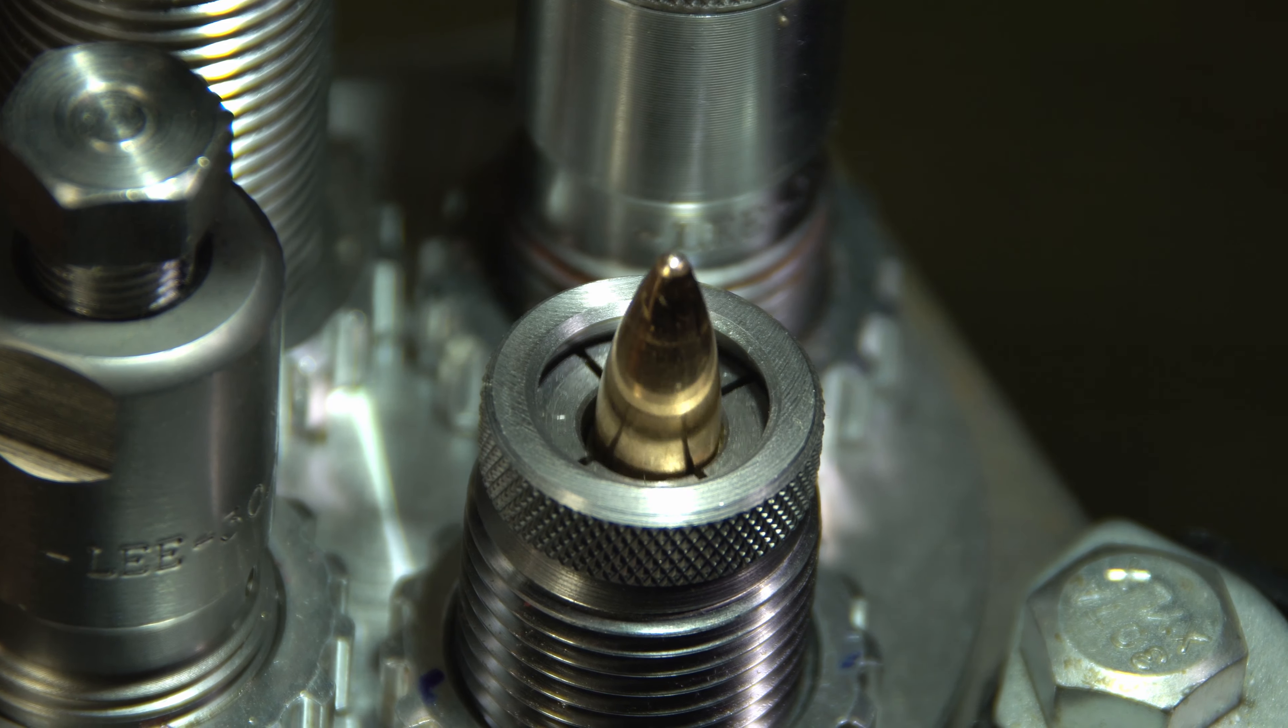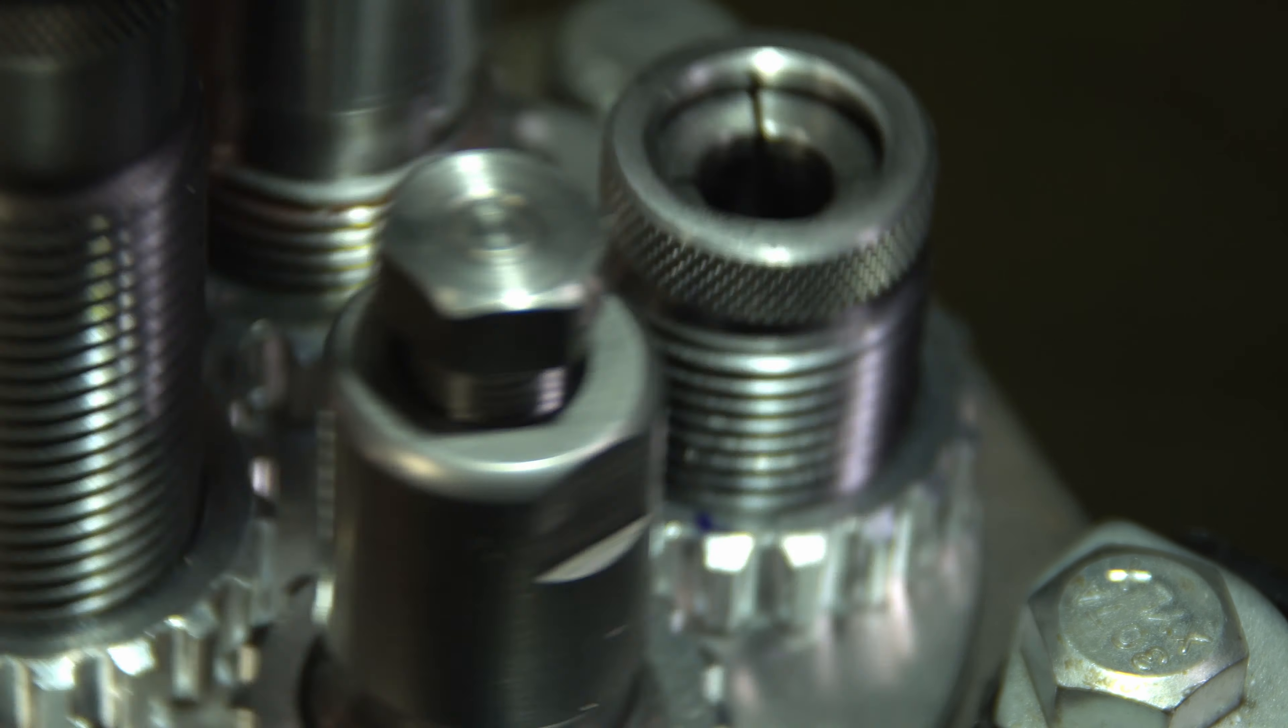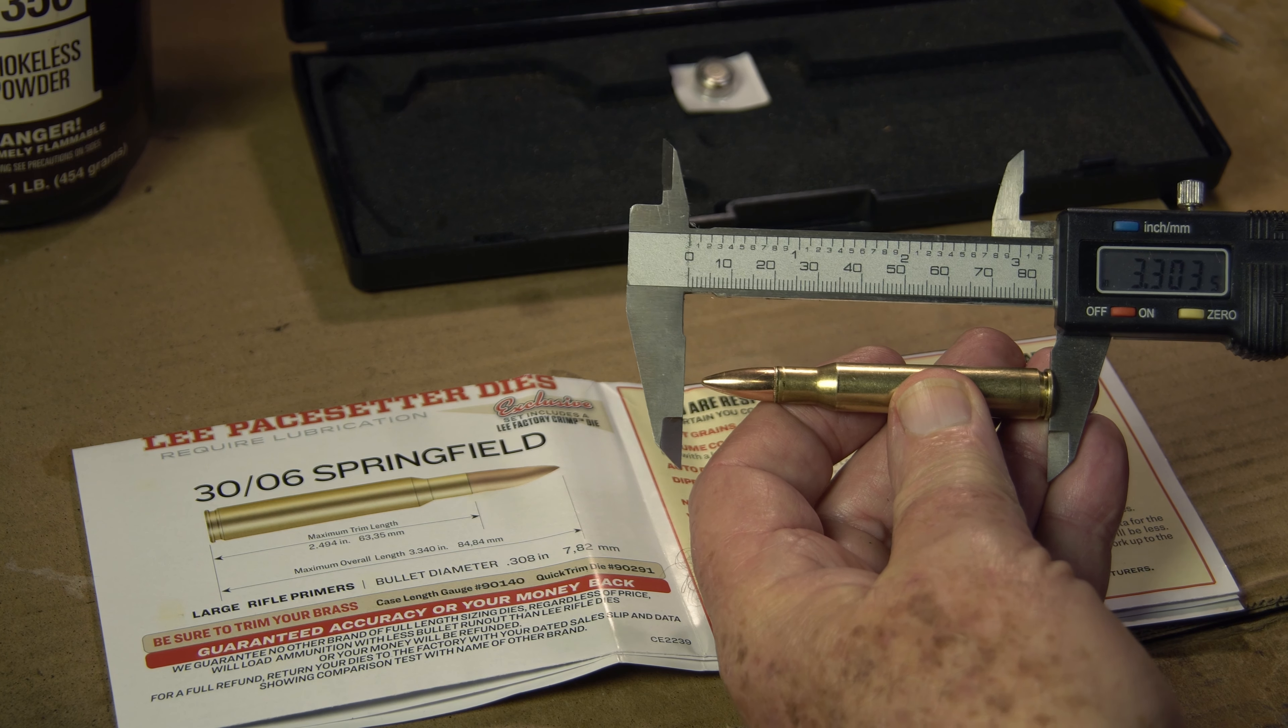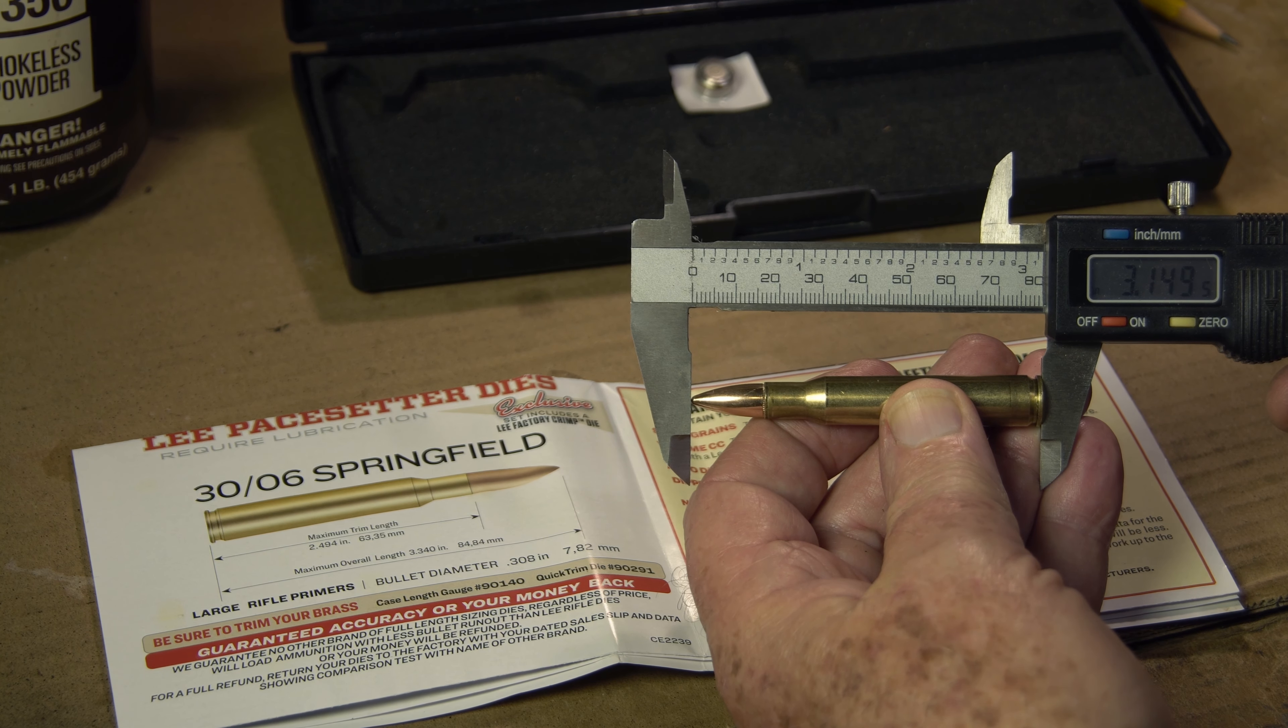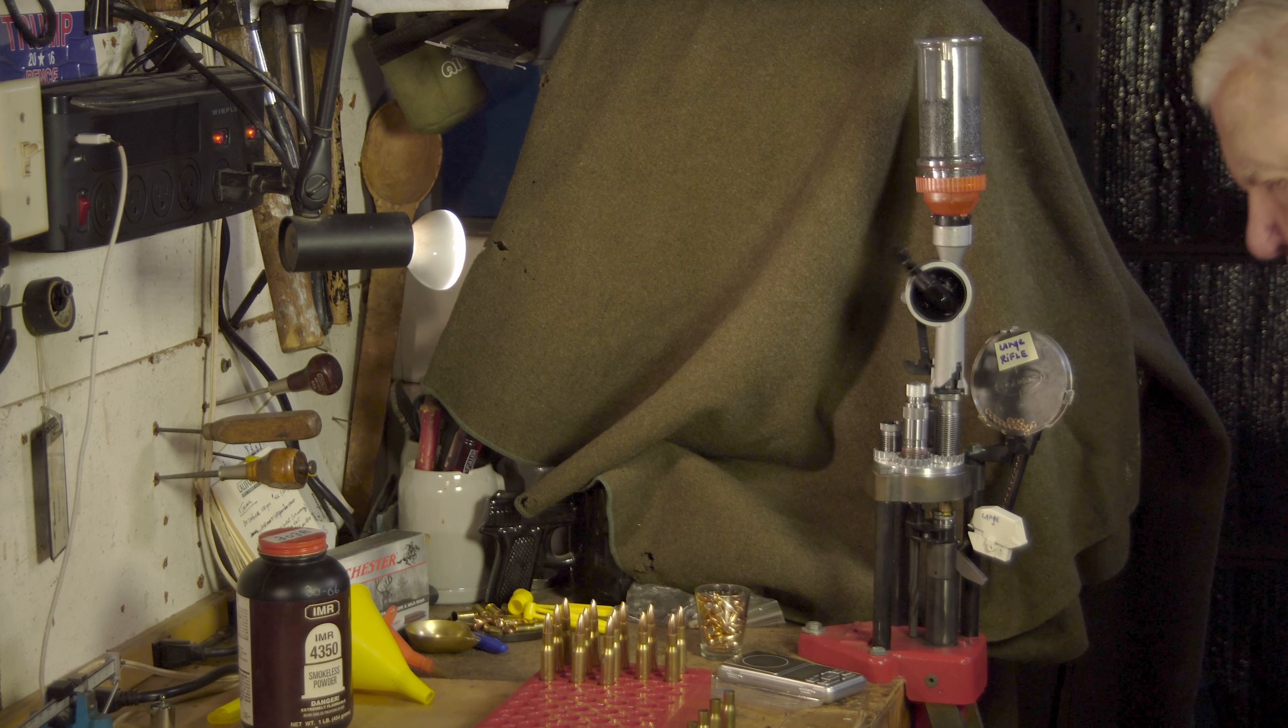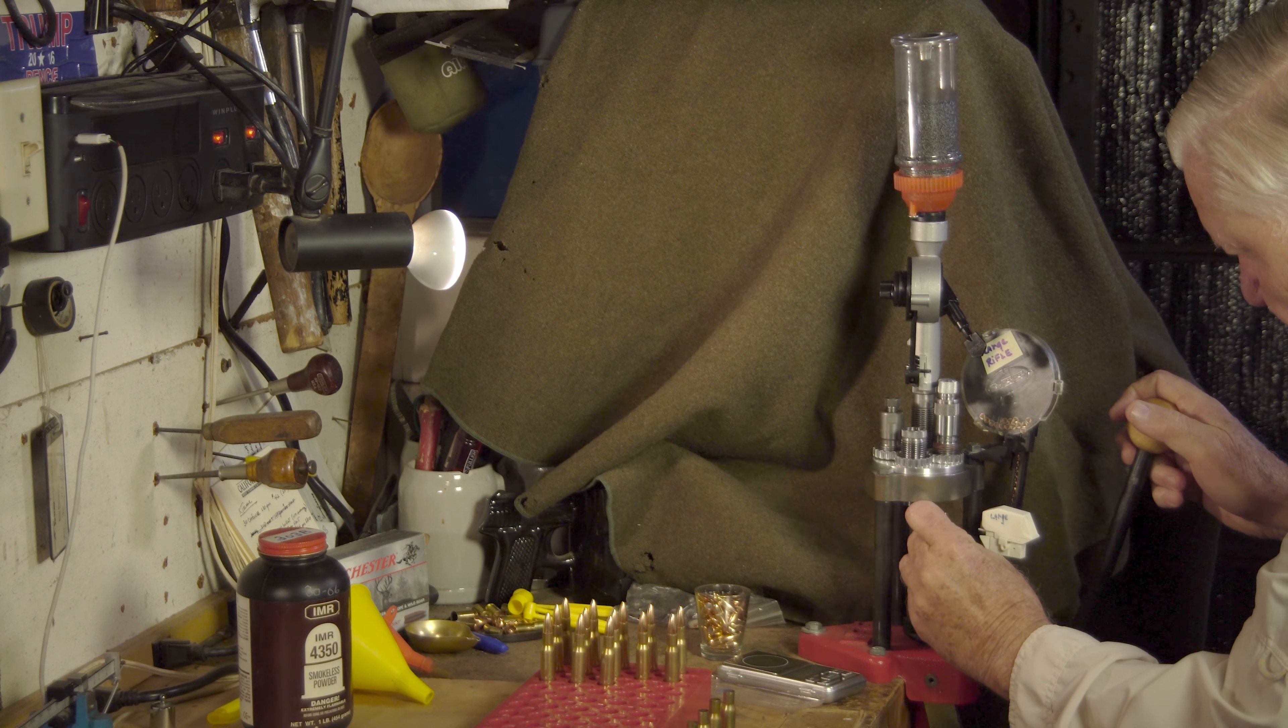Our reload looks good, seated at the cannelure. And then on to the last die, the crimper for a mild crimp. I set the die per Lee's instructions. Now let's check the round visually and check the length so it doesn't exceed the maximum. Looks good. We'll make 15 of these rounds and 15 of the 56 grain version for our test in the desert.